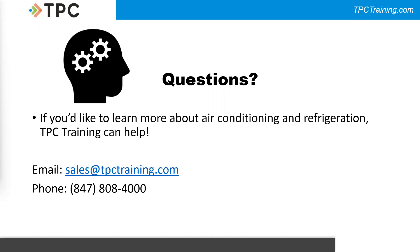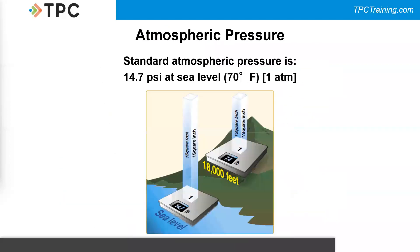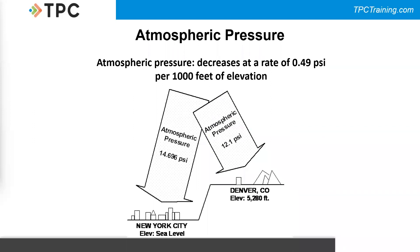A question from Antoine about elevation: if you're in Denver, would your zero point be at 12.1 PSI? Exactly — in Denver, zero PSIG corresponds to 12.1 PSIA, whereas in New York City zero PSIG corresponds to 14.696 PSIA, now rounded to 14.7. If you take your gauges from one location to another it's important to recalibrate them; otherwise you won't get an accurate reading. Newer digital gauges have a button for automatic calibration.